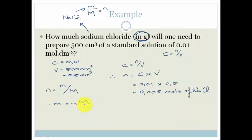We want the mass because that's in grams. So therefore, do you agree we can say mass is number of moles times the molar mass? And where do we get the molar mass from? We get that from the periodic table. So the number of moles is 0.005 times by the molar mass of sodium chloride.